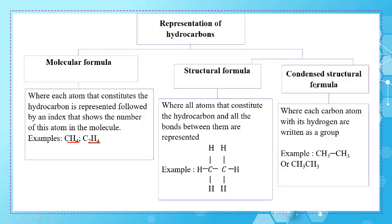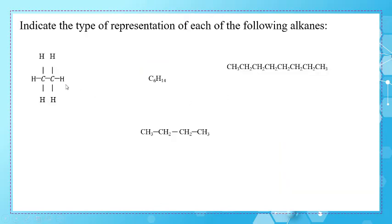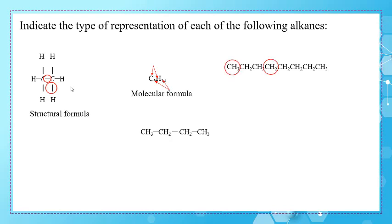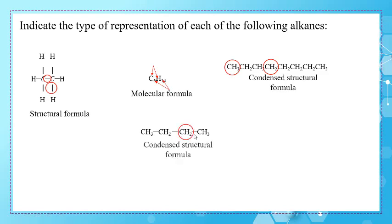In this application we have to indicate the type of representation in each case. The first shows all bonds and all atoms, so it's a structural formula. The second shows only atoms with indices, so it's a molecular formula. The last two show each carbon grouped with its surrounding hydrogens — these are condensed structural formulas. In one the bonds between carbons are not shown, in the other they are shown, but both are condensed structural formulas.